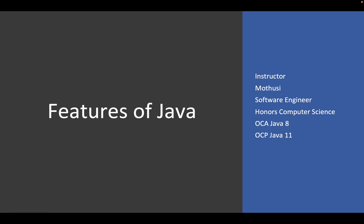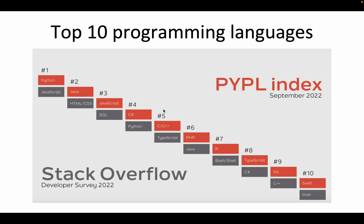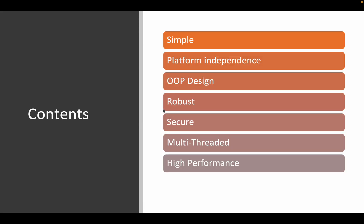Welcome to our very first lecture on Java. We are looking at the features of the Java language. Java is one of those highly used languages in the industry today. If you do a Google search, you will realize that it generally appears among the top five. The question that remains is why is it preferred among industry professionals and companies even today? We are going to look at the following points and treat each one of them separately.